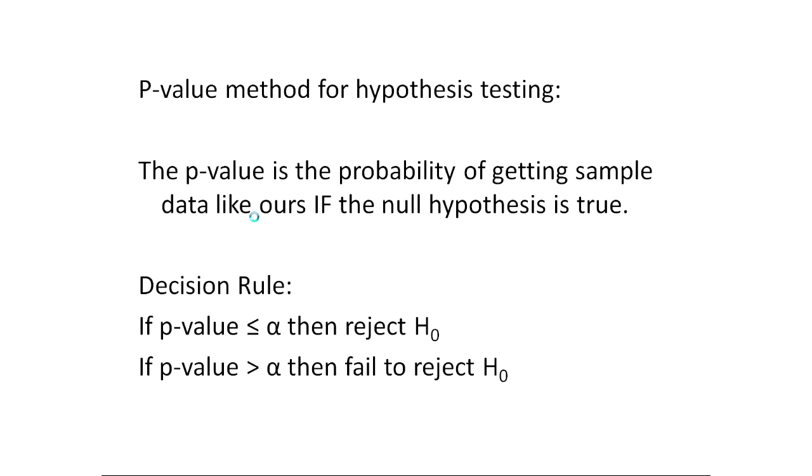We're going to see two methods of hypothesis testing. One of the big methods is a p-value method. This uses technology to find a probability of getting a sample like ours if the equality statement in H naught is true. It's very important to understand the p-value. Probability of a sample as extreme or more extreme than ours if the null hypothesis, the equality statement of the null hypothesis is true.